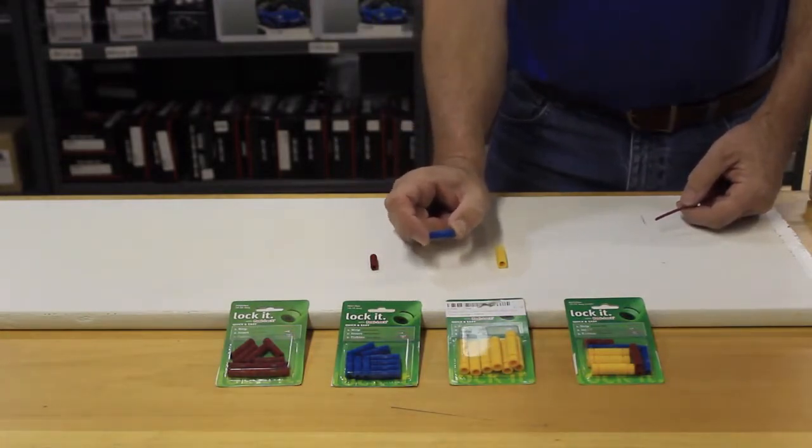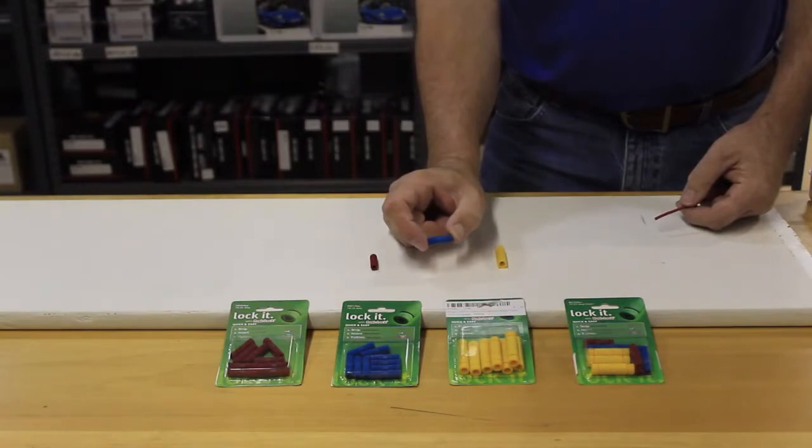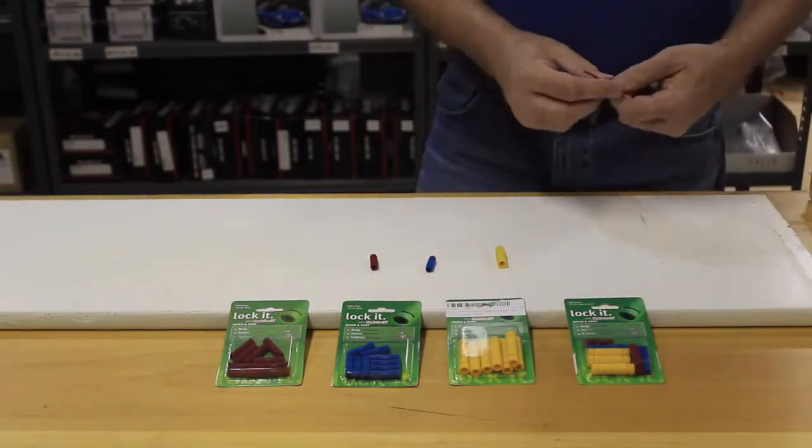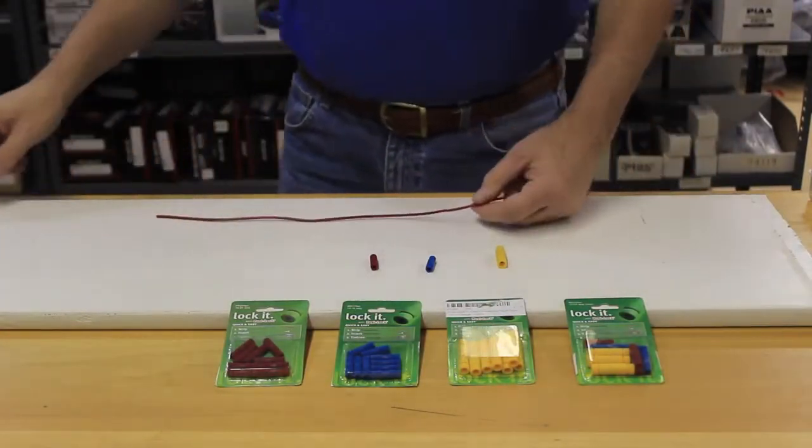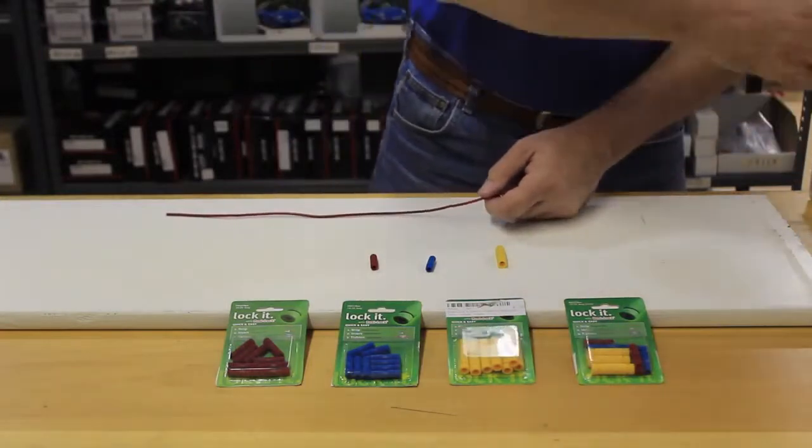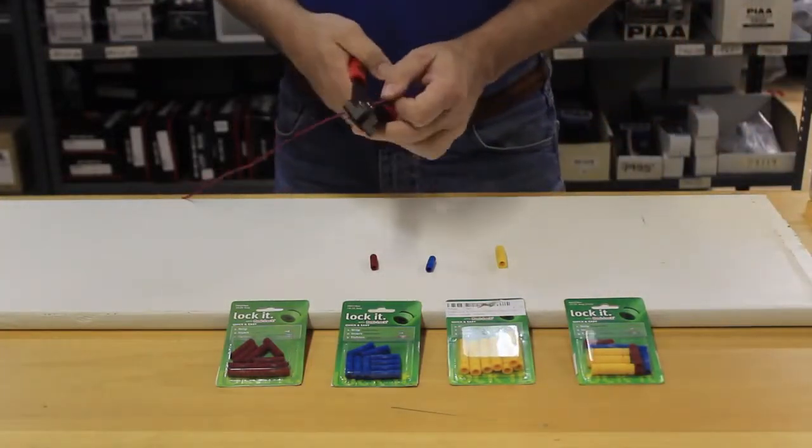Let's see how fast and simple it is to connect a wire with a Posi-Lock. We're going to take this blue Posi-Lock right here and we're going to take this piece of wire that you could typically find on your motorcycle anywhere, and we're going to cut it and then reconnect it. First I'm going to cut it with the wire cutters here. Now we have two wires.